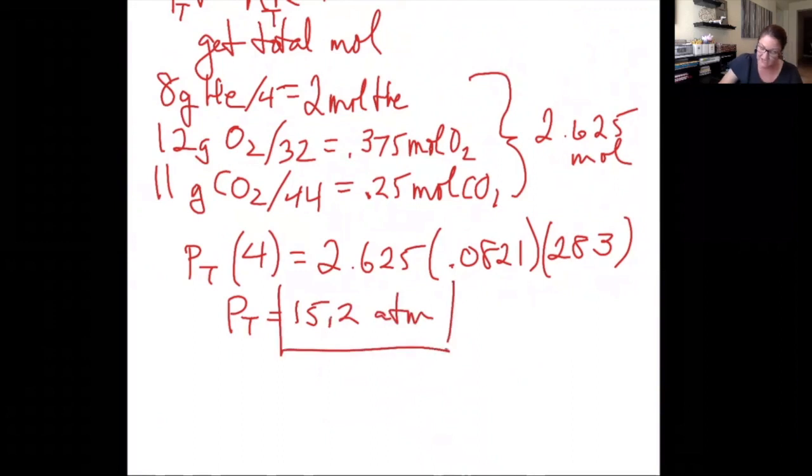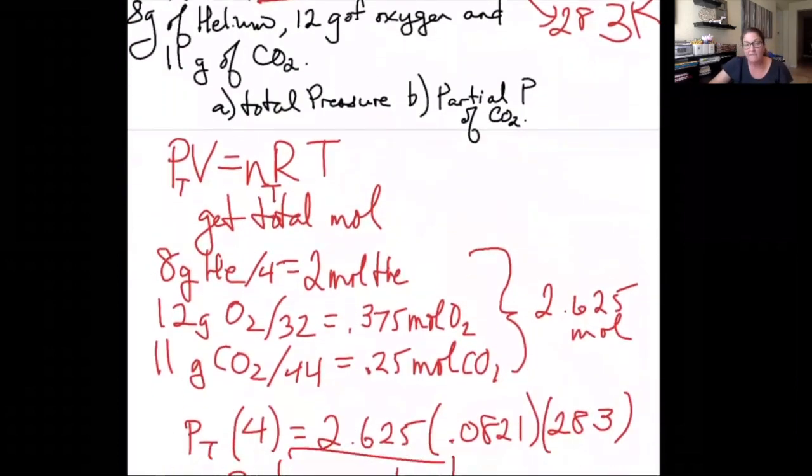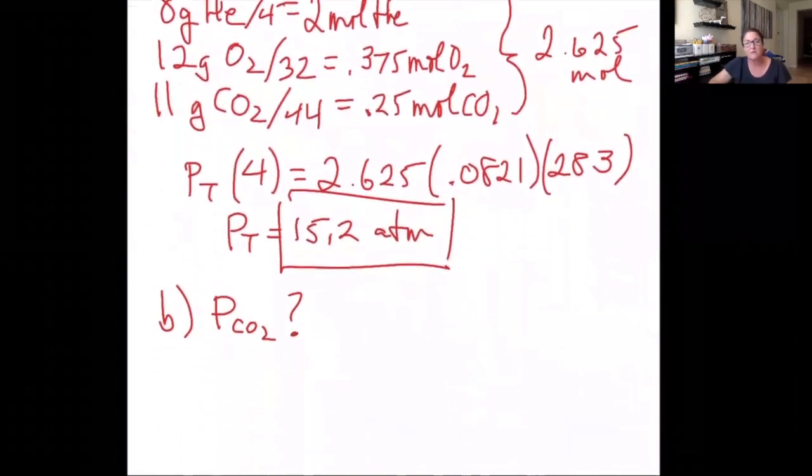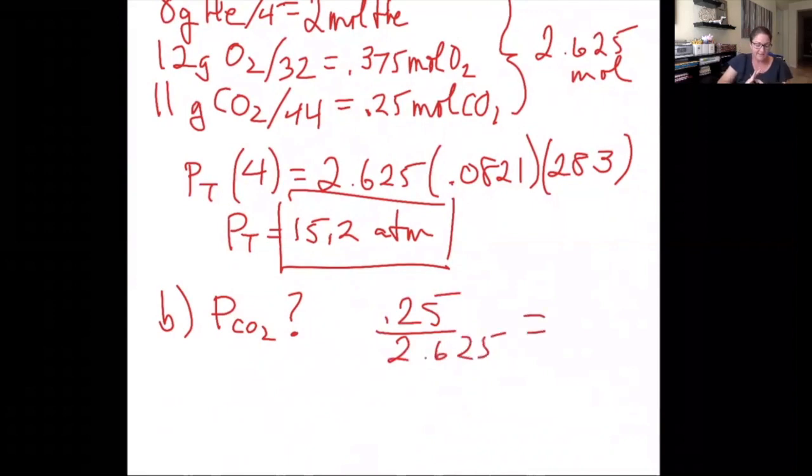And that's my answer to A. Part B asked me to find the partial pressure of CO2. If I want to get the partial pressure of CO2, now that I have the total pressure, I can find the mole fraction and then do it. So my mole fraction of CO2 is the moles of CO2 over total, 0.25 divided by 2.625, which is a mole fraction of 0.095.